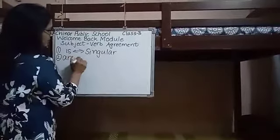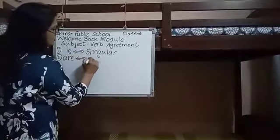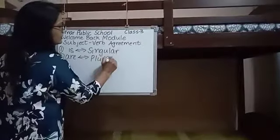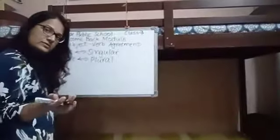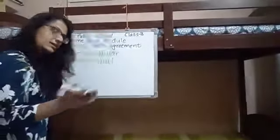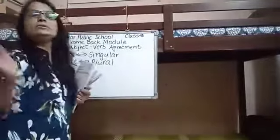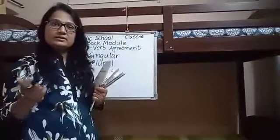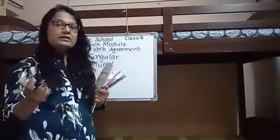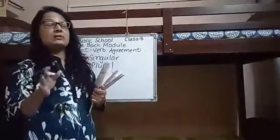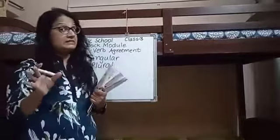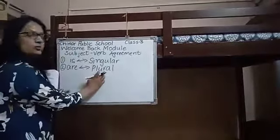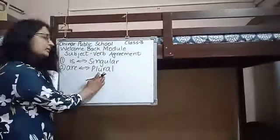'Are' is used with plural nouns or pronouns. For example, 'We are going to Jaipur.' 'They are going to market.' 'Ram and Shyam are good friends.' So, 'are' is used with plural nouns or pronouns.